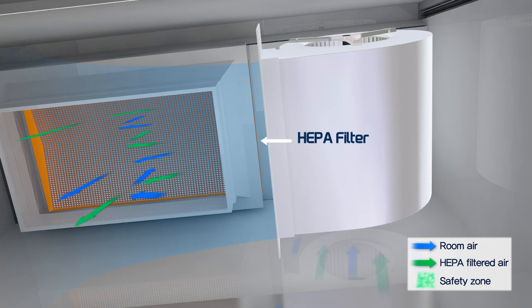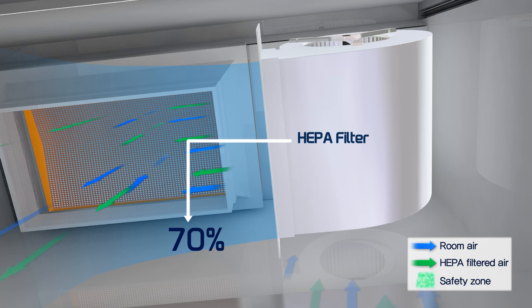70% of total air through the blower will be recirculated to the chamber through supply HEPA filter. And 30% of total air will be exhausted outside through exhaust HEPA filter.